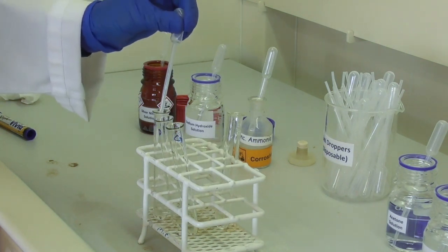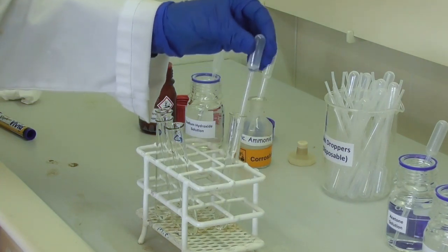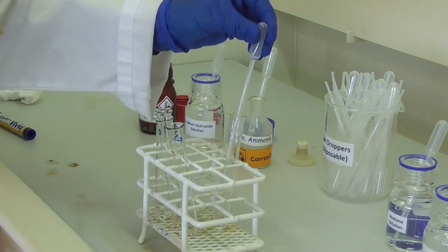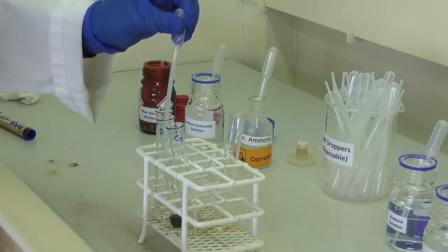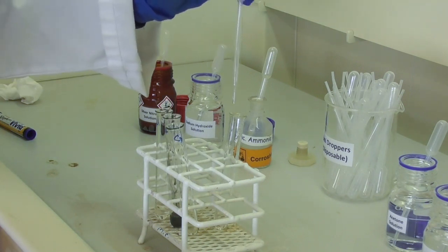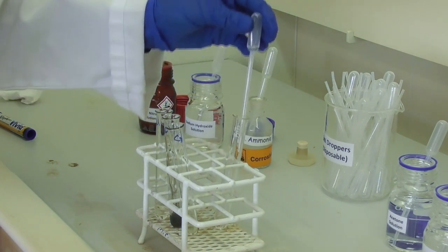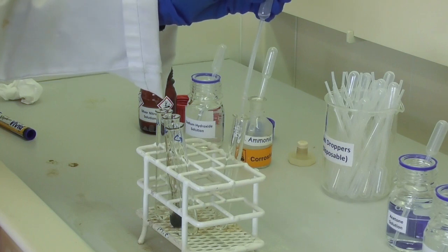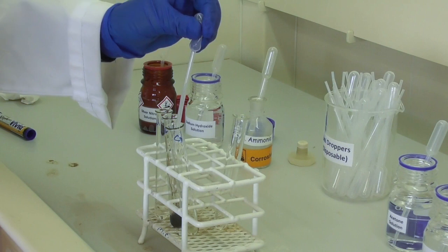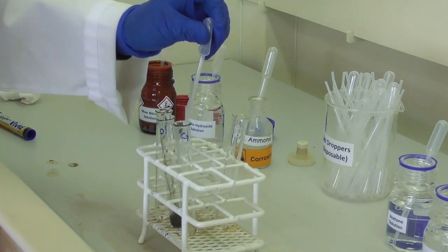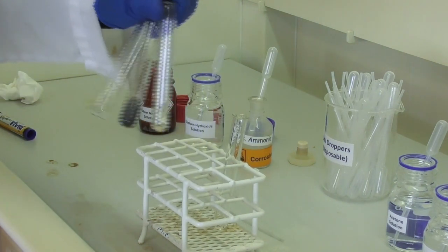And then we add one milliliter of the tolerance reagent into each of the three test tubes with acetone, propanol and glucose. After the addition of the reagent, we give all the test tubes a good shake.